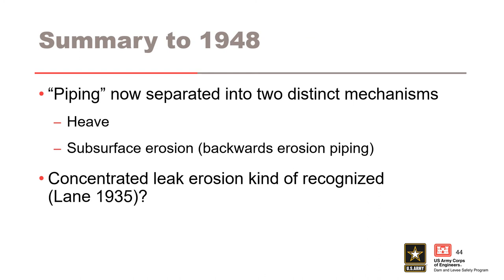So if we stop here and summarize through 1948: piping as a whole category has been separated into two mechanisms — heave and subsurface erosion, which refers to backwards erosion piping in modern context. We would consider heave as an initiating mechanism for other internal erosion processes, usually backwards erosion piping. Concentrated leak erosion has also been somewhat recognized in Lane's studies. However, at this point in time there has been no clearly written work that delineates backwards erosion piping and concentrated leak erosion as two distinct, separate internal erosion mechanisms.